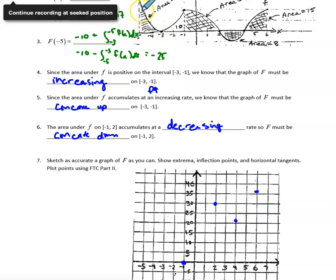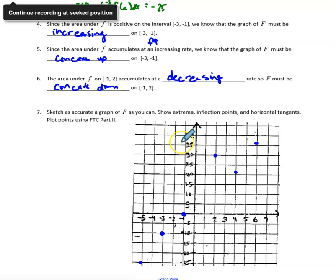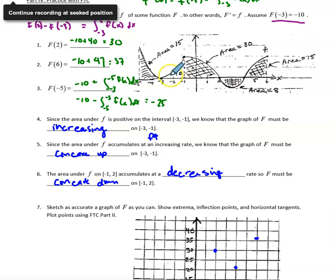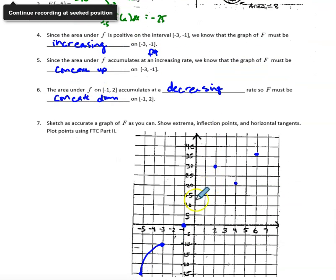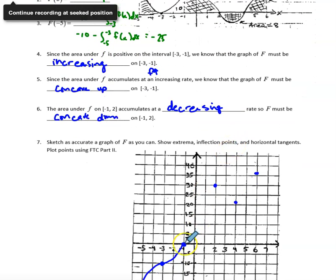For the first section, little f is positive but decreasing, so big F must be increasing but concave down. Connecting those two points, I'm increasing but concave down. Then little f is positive and increasing, so big F is increasing and concave up — I just switch concavity and stay increasing. On the interval from negative 1 to 2, little f is still positive so big F is still increasing, but little f is decreasing so big F needs to be concave down again. I'm changing concavity to connect to the next point.